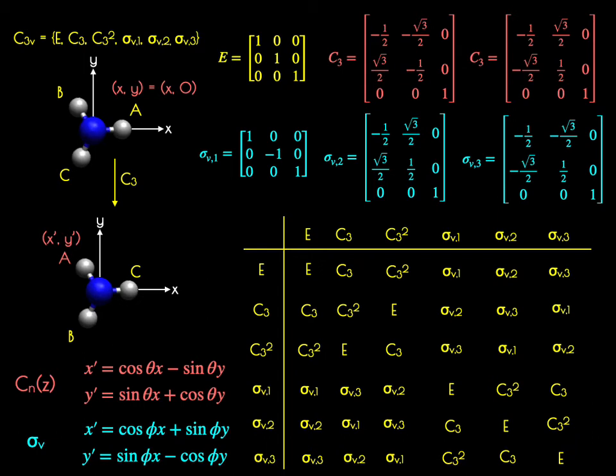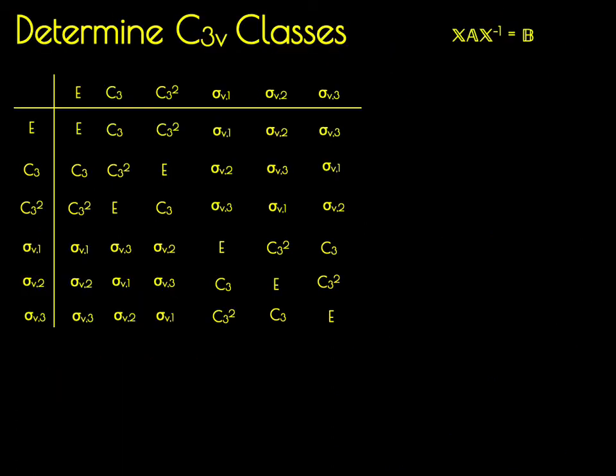Obtaining the multiplication table is important because we have to determine the similarity transform by all elements A by X. So we need to know what the inverse of every single element is, plus it's convenient to see how different elements will multiply together.